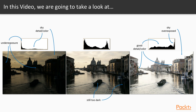When we take photographs of a real world scene, bright regions may be overexposed, while the dark ones may be underexposed, so we can't capture all details using a single exposure. Here we have three photos of the same scene taken at three exposures. The exposure determines the amount of light hitting the sensor and can be controlled either by changing the camera shutter size, where a larger shutter allows more light to enter the camera, or by controlling the time the shutter remains open, where a longer exposure time allows more light to enter.